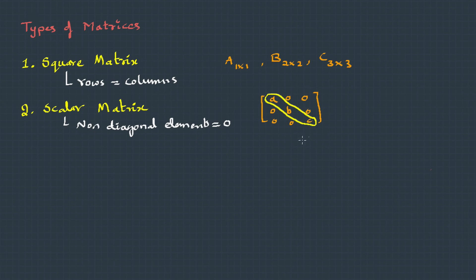The third type is identity. It's basically a scalar matrix with the diagonal elements as 1. This is an identity matrix of order 2, and this is an identity matrix of order 3.